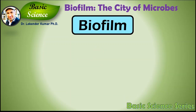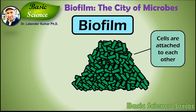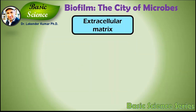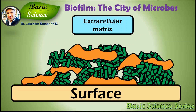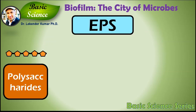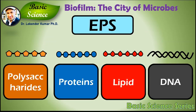Let's first define a microbial biofilm. A typical biofilm is composed of a population of microorganisms in which microbial cells are attached to each other and also attached to a solid surface. These cells are embedded within a slimy extracellular matrix composed of extracellular substances. This extracellular substance acts as a cementing material to keep the structure of the biofilm intact. Extracellular substances include polysaccharides, proteins, lipids, and DNA — deoxyribonucleic acid.